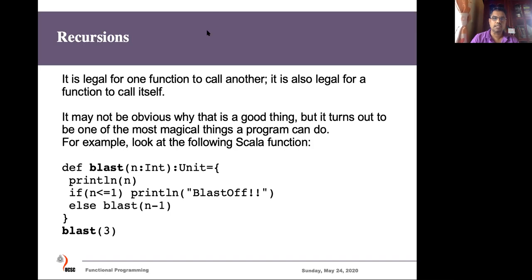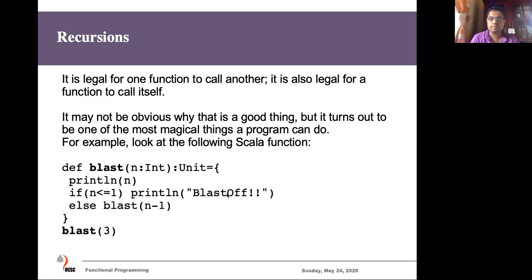In the first example I will show you a recursive function called 'blast'. This function takes one input of unsigned int type and returns anything. It prints the input value n, then checks whether n is less than or equal to one — if so, it prints 'blast off'. Otherwise, in the else part, we call the function 'blast' again. Since we call the same function within the body of that function, that is called recursion.